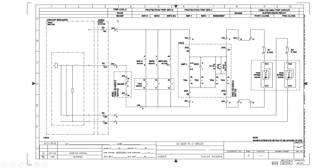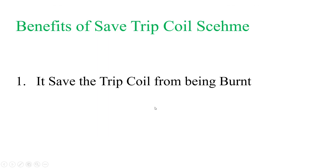This is the Trip Coil 1 and 2 save scheme and it is very helpful to save our coils. The benefit of the Save Trip Coil scheme is that it saves the trip coil from being burnt in case of a circuit breaker failure condition, where the breaker is receiving a continuous positive pulse but is not operating. The CBF NC contact will open and save the trip coils. Thank you for watching.